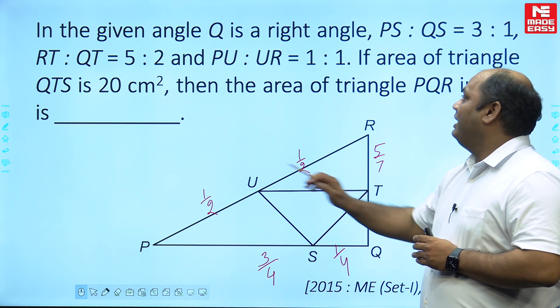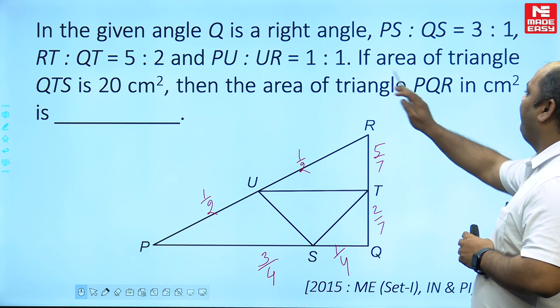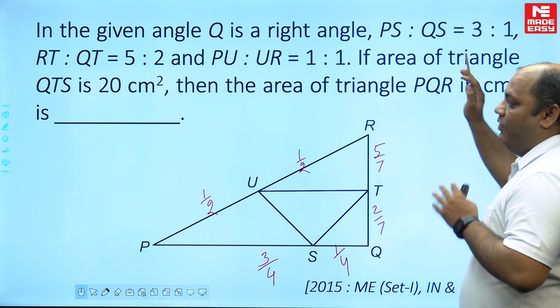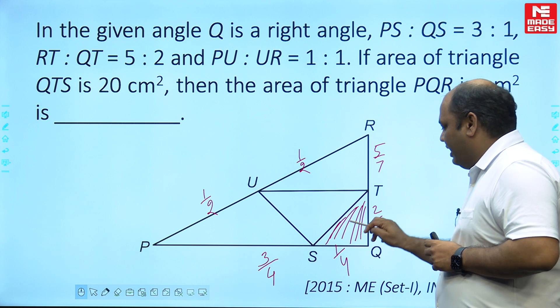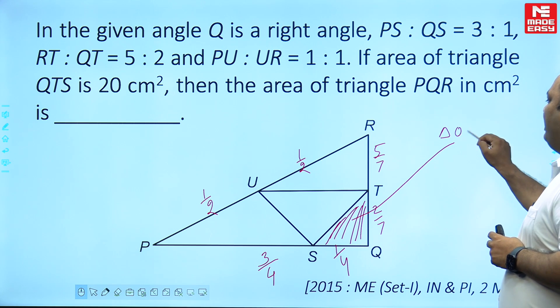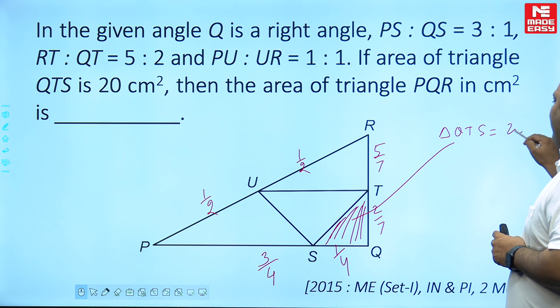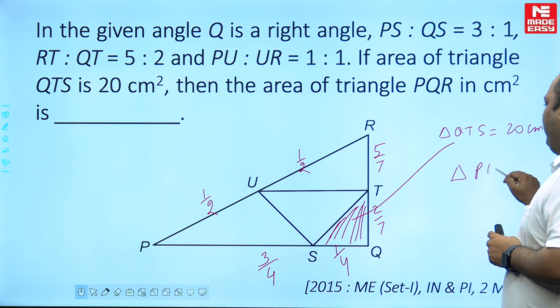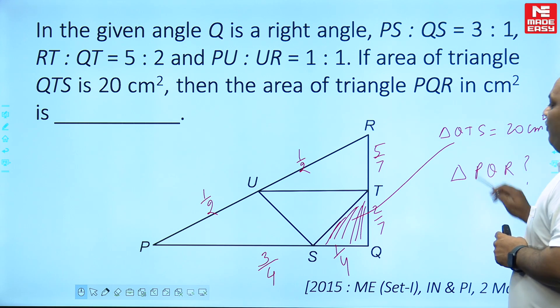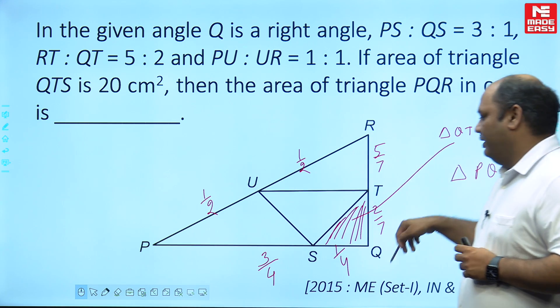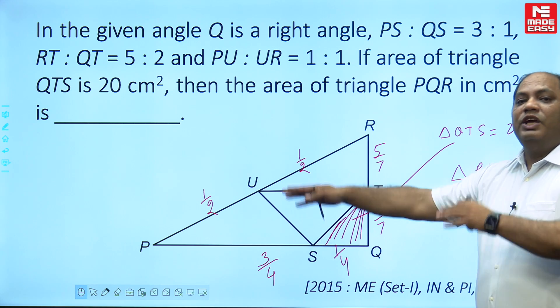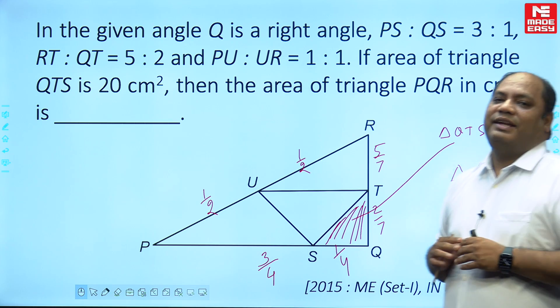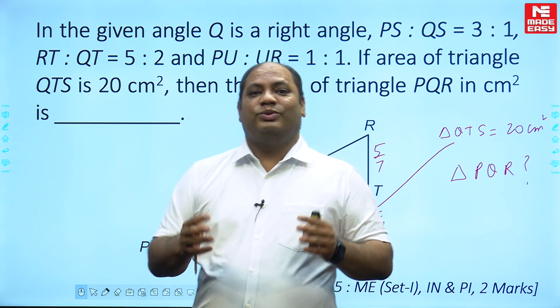So the ratios of these points are given to you. Through that all triangle is formed UTS. Now what they are saying is that if the area of triangle QTS is given as 20 cm², then what is the area of triangle PQR. So you have to find the full triangle area. Basically ratios are given to you, a subsection is given to you as 20, and then you are required to find out the area of the entire triangle.